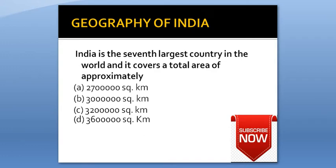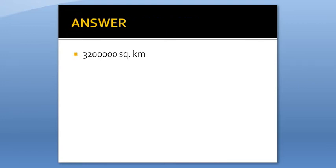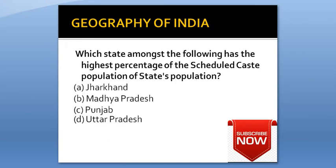India is the 7th largest country in the world and it covers a total area of approximately: Option A: 2,700,000 km². Option B: 3,000,000 km². Option C: 3,200,000 km². Option D: 3,600,000 km². Answer is 3,200,000 km².